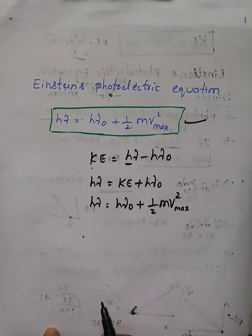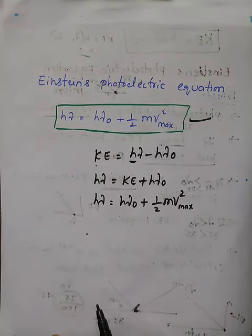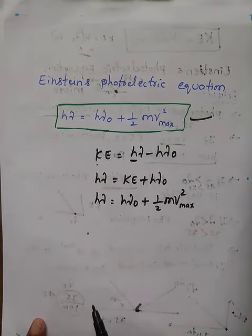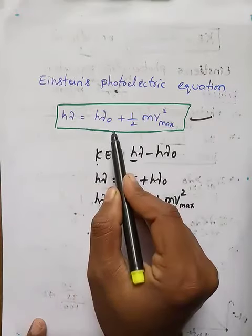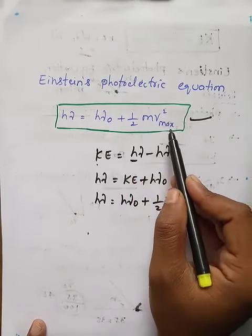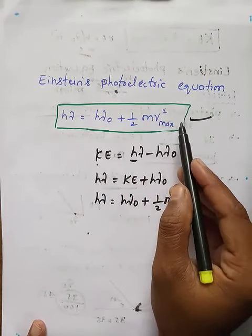Suppose they are asking, mention Einstein's photoelectric equation and explain the symbols. This is a two marks question. Einstein's photoelectric equation: h nu equals h nu naught plus half mv square, where v square is actually v maximum square.